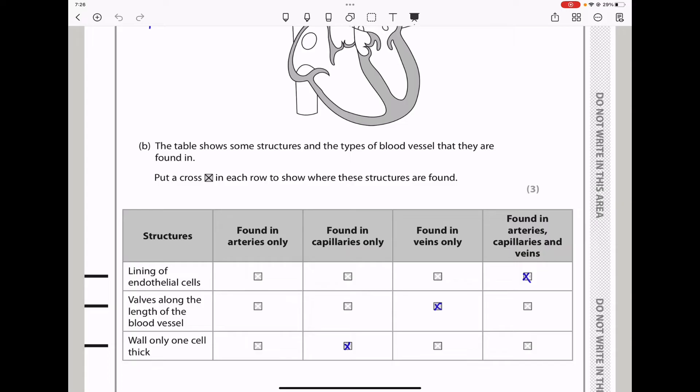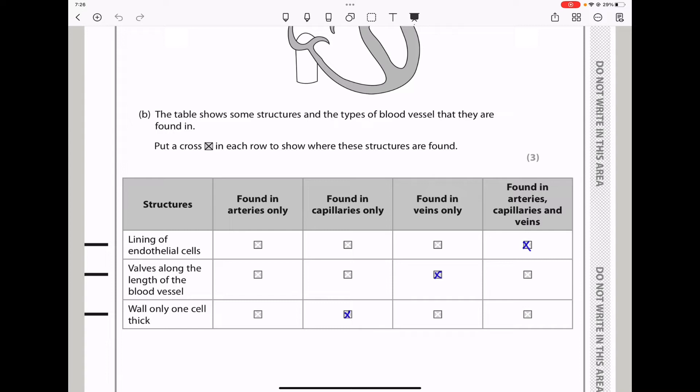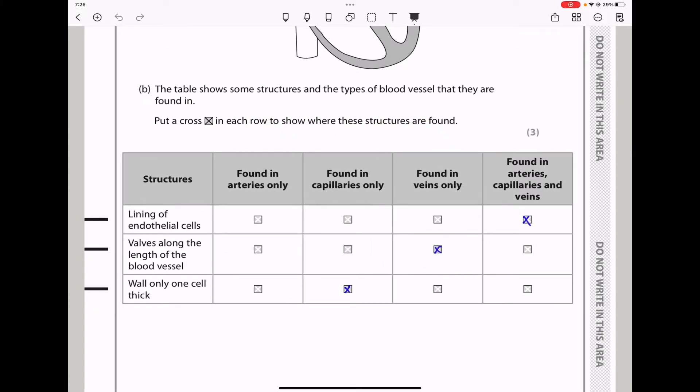Here they say the table shows some structures and types of blood vessels that they are found in. They want you to put a cross in each row to show where these structures are found. So we see the structures: lining of endothelial cells. This is found in arteries, in capillaries, as well as veins. They all have endothelial cells. Valves along the length of the blood vessels. These are only found in veins in order to prevent the backflow of blood. So the answer should be that. And here we see wall only one cell thick. These are found in the capillaries, and the answer should be here.